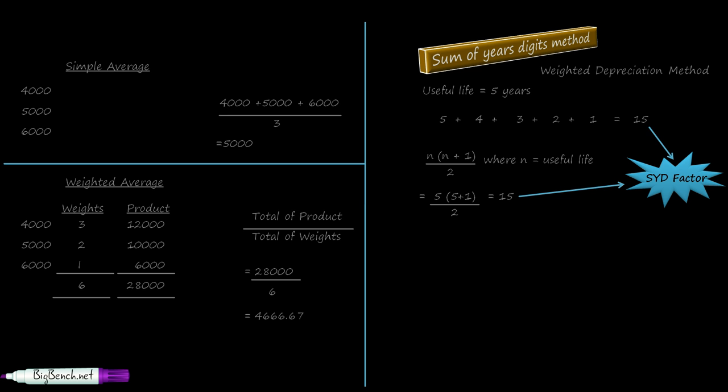To calculate depreciation for the first year under this method, recall the SLM formula: cost of asset minus scrap value divided by life of asset. Here, instead of the life of asset in the denominator, we write the SYD factor — the total of weights. Once calculated, we multiply by the maximum weight among all 5 weights. The maximum weight among 5, 4, 3, 2, 1 is 5, so we multiply by n.